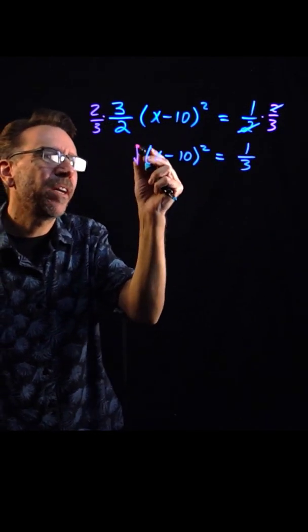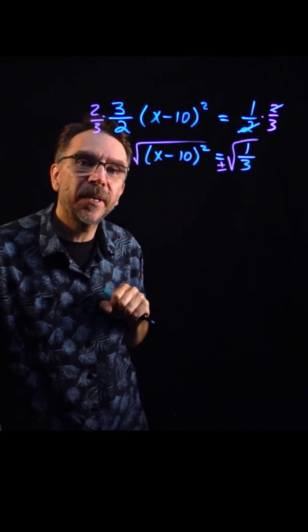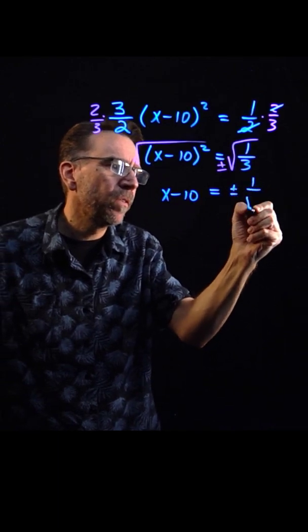Okay, now at this point I have a square so I can extract the roots. Taking the square root of both sides, don't forget the plus or minus. That leaves us with x minus 10 equals plus or minus one over the square root of three.